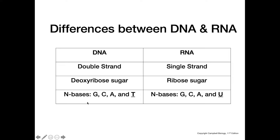The bases in DNA are guanine, cytosine, adenine, and thymine. But in RNA the nitrogenous bases are guanine, cytosine, adenine, and uracil. So if a nucleic acid contains uracil, it has to be RNA, because uracil will never be in DNA — just as thymine will never be in RNA.